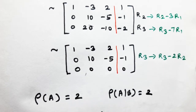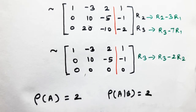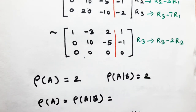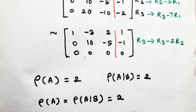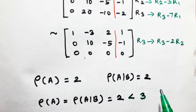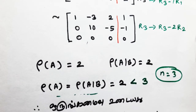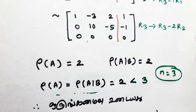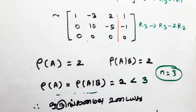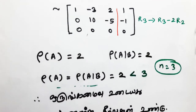Now we check the three conditions. The n value (number of variables) is 3 — that is x, y, z. The rank of A equals rank of [A|B] equals 2, and 2 is less than n equals 3. Since rank of A equals rank of [A|B] but is less than n, the system is consistent.